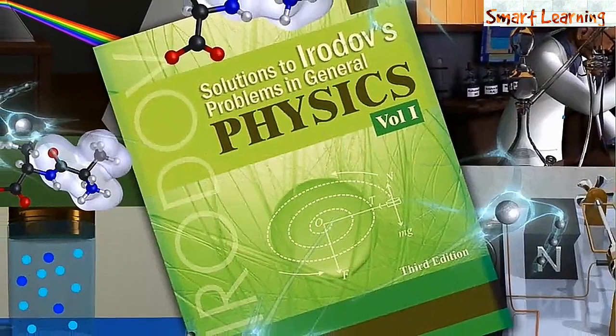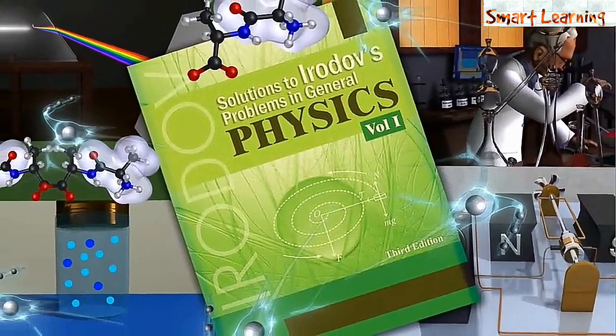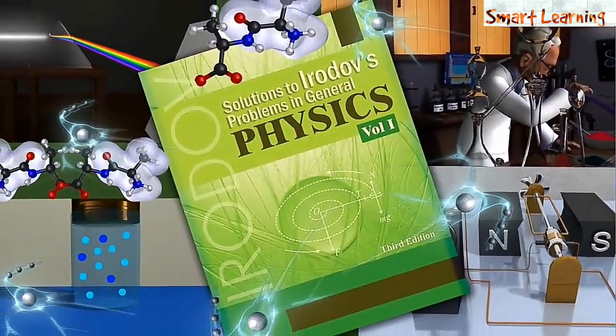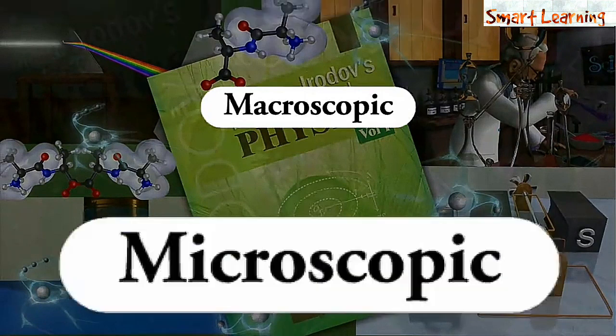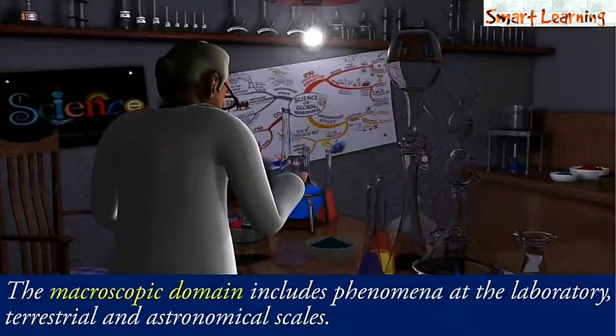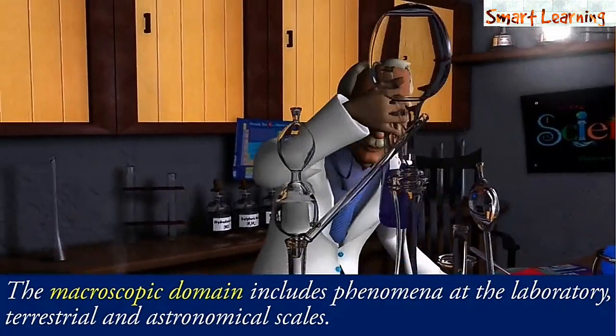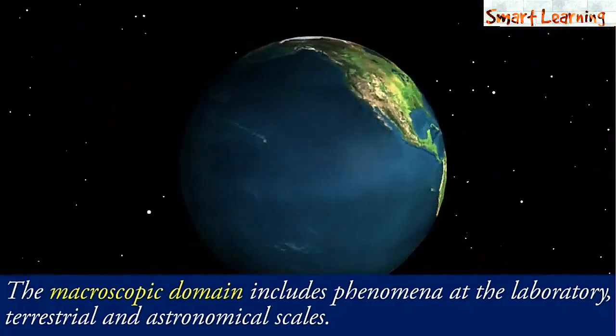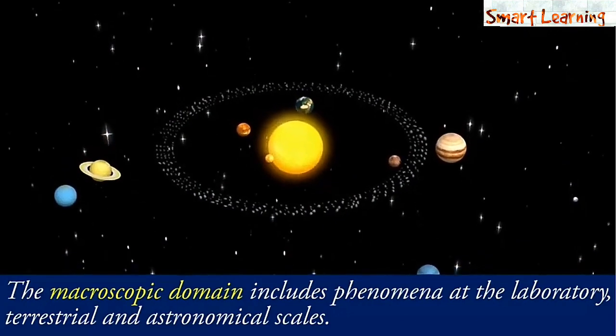We get some idea of the scope of physics by looking at its various sub-disciplines. Basically, there are two domains of interest: macroscopic and microscopic. The macroscopic domain includes phenomena at the laboratory, terrestrial and astronomical scales.